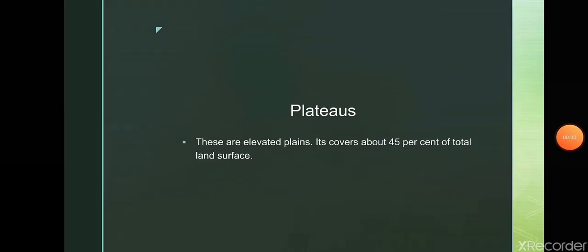The next form of land is plateaus. Plateaus are elevated plains, also called table lands, that cover about 45% of the land surface. Most plateaus are composed of old, hard metamorphic rock and are therefore a storehouse of minerals like iron ore, manganese, coal and bauxite.